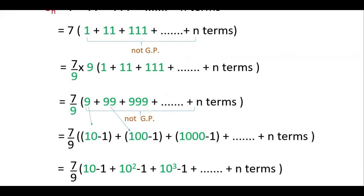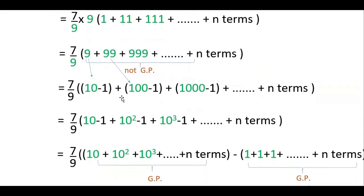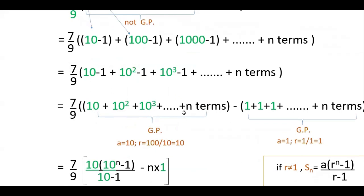So now you can divide the expression: (10 minus 1) plus (10 squared minus 1) plus (10 cubed minus 1), till n terms. Separate into two GPs: one with 10, 10 squared, 10 cubed and another with minus 1, minus 1, minus 1. Since 7 by 9 is a common factor, you can write: 7 by 9 into [(10 plus 10 squared plus 10 cubed till n terms) minus (1 plus 1 plus 1 till n terms)]. The first is GP with common ratio 10, and the second is GP with common ratio 1.